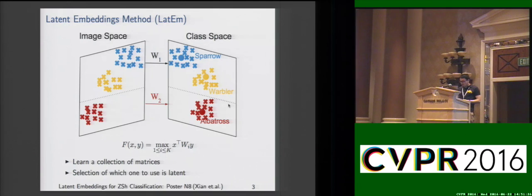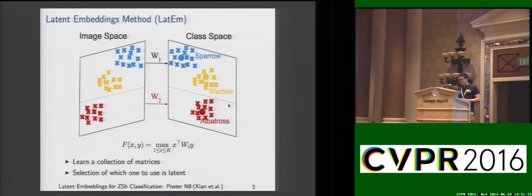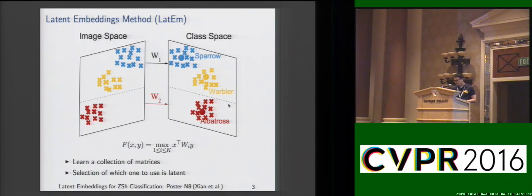For example, in this case, both bear and warbler select W1 as the embedding matrix, because they are both forest and small birds, while the waterbird class selects W2, and all the image instances are correctly projected.